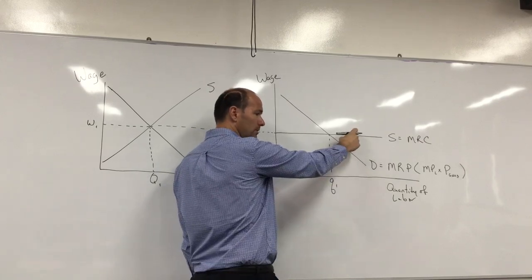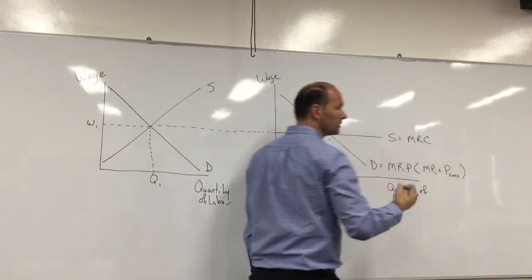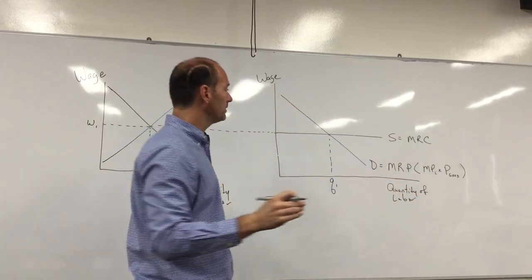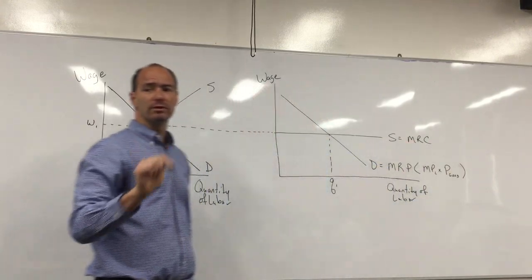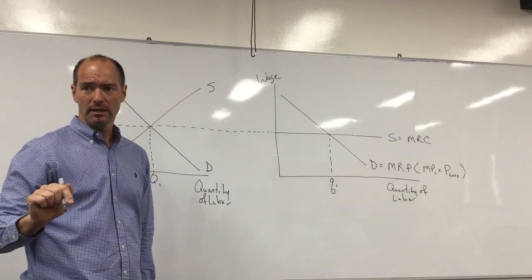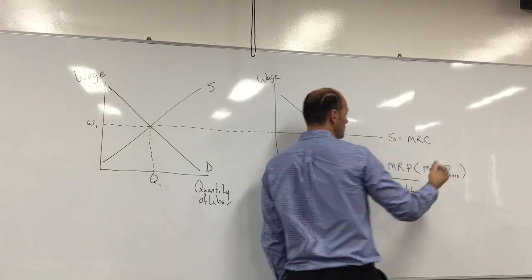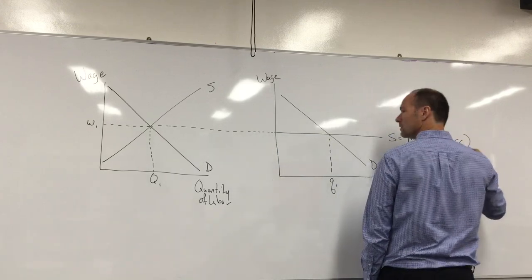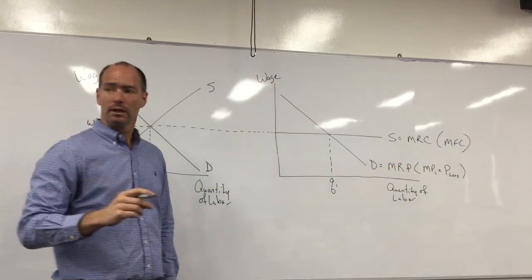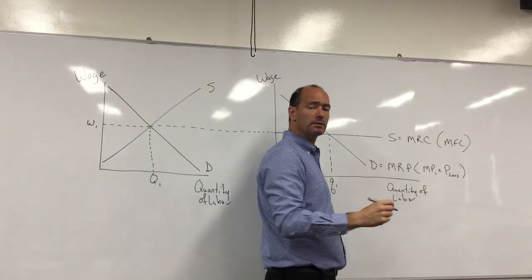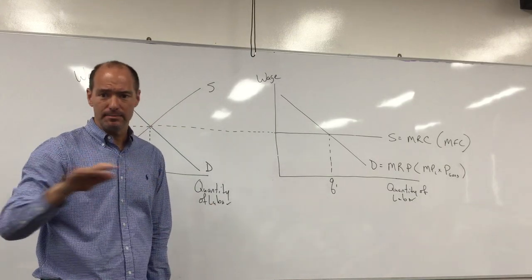The term for supply in the labor market for the firm—we refer to it as the marginal resource cost, or MRC. So just labeling it as supply is not enough; you need S equals MRC. In some books, you'll see it labeled MFC, which is marginal factor cost. They mean the same thing.